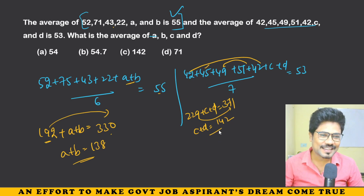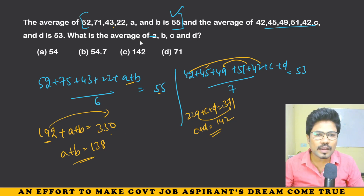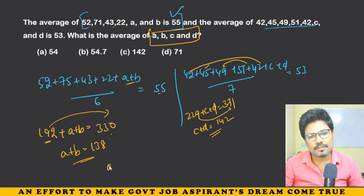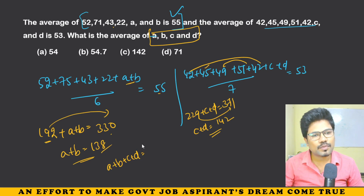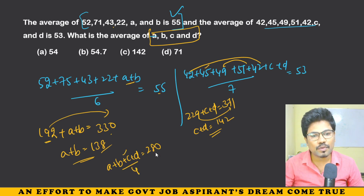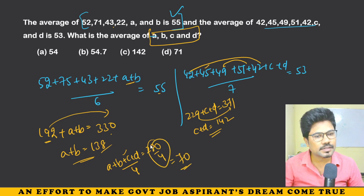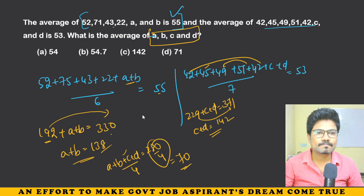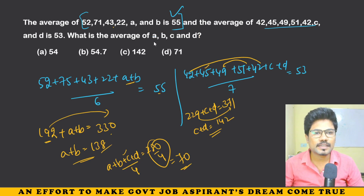Now let's find the average of A, B, C, and D. A plus B plus C plus D equals 138 plus 142, which is 280. The average of these four is 280 divided by 4, which gives approximately 70.